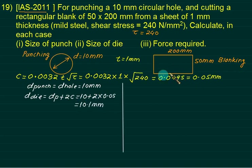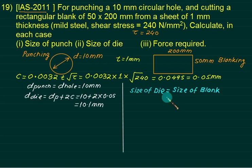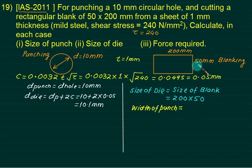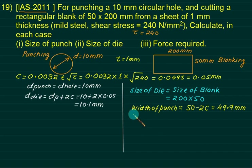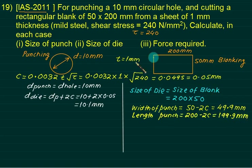For punching, the punch diameter equals the hole size (10 mm) and die diameter = punch diameter + 2c = 10.1 mm. For blanking, the die size equals the blank size (200×50 mm). The punch width = 50 - 2×0.05 = 49.9 mm, and punch length = 200 - 2×0.05 = 199.9 mm.